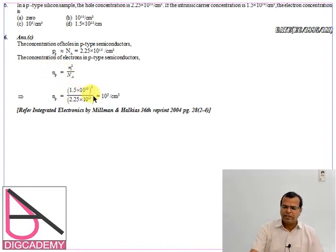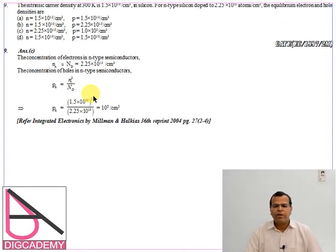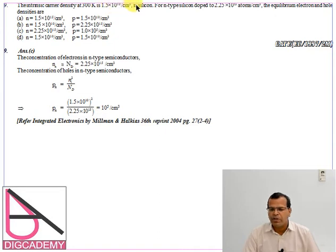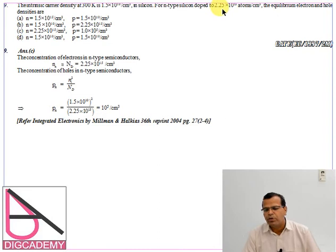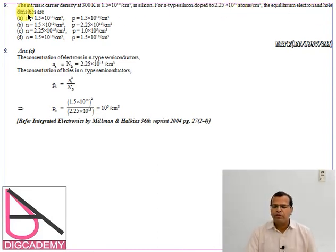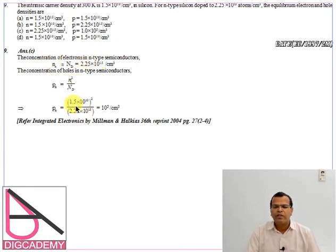Another question: intrinsic carrier concentration at 300K is 1.5 × 10^10 in silicon. For N-type silicon doped to 2.25 × 10^15 atoms per centimeter cube, find the equilibrium concentration of holes. Donor concentration and intrinsic carrier concentration are given, so holes in N-type = Ni² / Nd. Substituting the given values into this expression gives the result; the answer is option C.